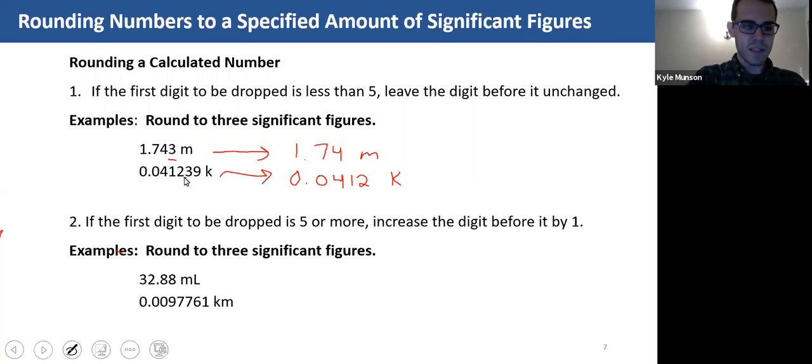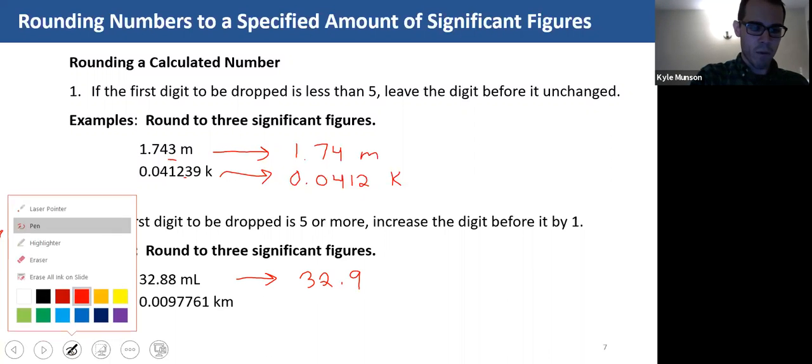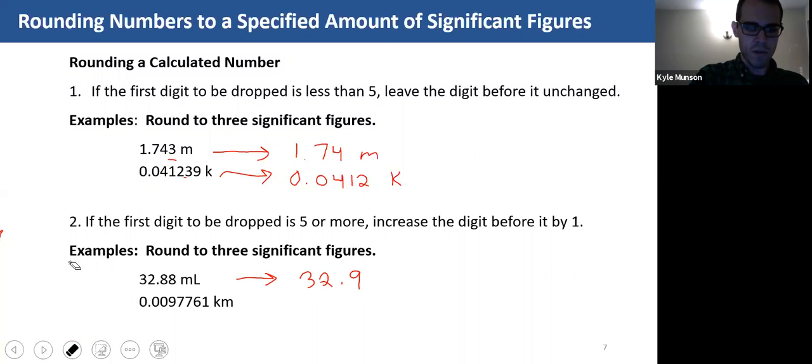So the next example is if the digit is five or more. The first digit to be dropped, we increase the digit before it by one. So again, let's round the following to three significant figures. This is going to be 32.9 mL.